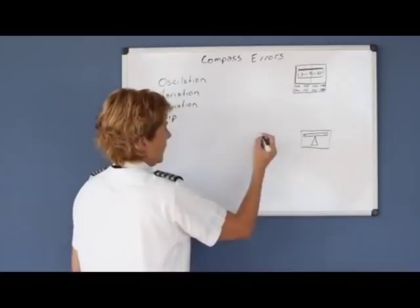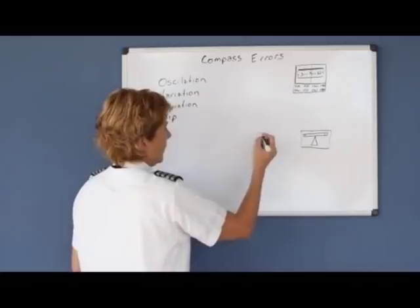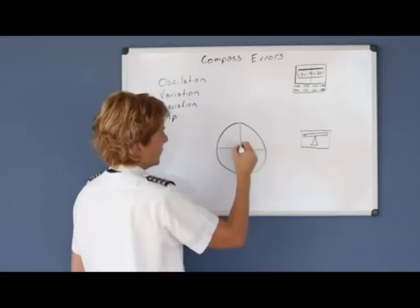Variation comes from the fact that on the earth we have the equator, and perpendicular to the equator, they draw lines of longitude.